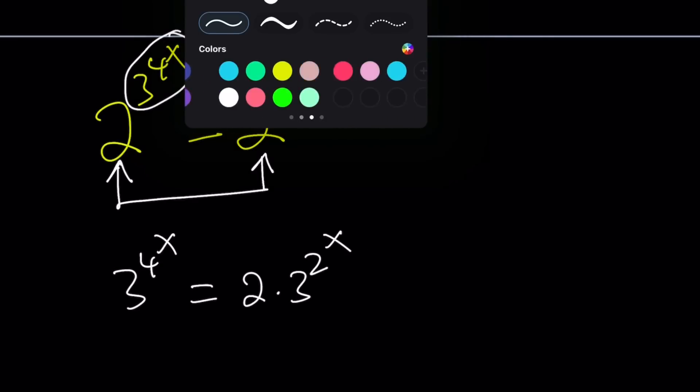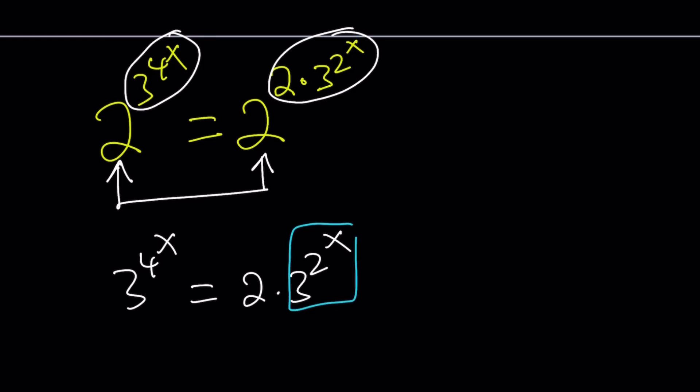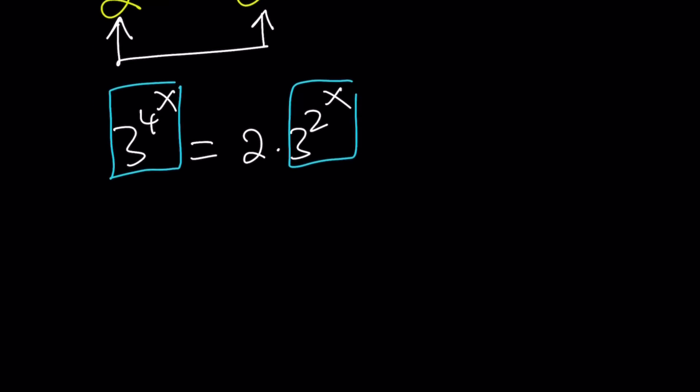So it makes sense if we put these two powers together because they have the same base, so that calls for division: 3^(4^x) / 3^(2^x) = 2.